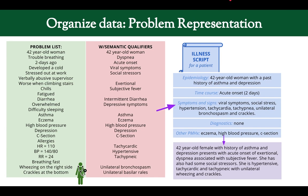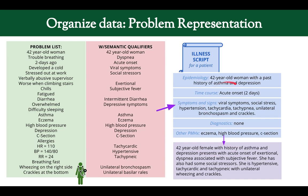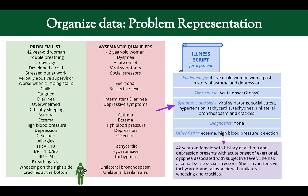The last step is creating a problem representation — a short couple of sentences describing the patient, drawn almost word-for-word from the patient illness script. For example: 'A 42-year-old female with a history of asthma and depression presents with acute onset of exertional dyspnea associated with subjective fever. She has also had some social stressors. She is hypertensive, tachycardic, and tachypneic with unilateral wheezing and crackles.' This is your assessment — the first part of your clinical write-up.